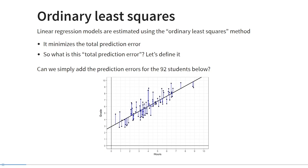So what is this total prediction error? How can we define it? If we look at the prediction errors in this graph, the error for each person is represented by a blue bar — the distance of that person's observed score relative to their predicted score according to the linear regression model. To get the total prediction error, can we simply add the prediction errors for the 92 students in this plot?